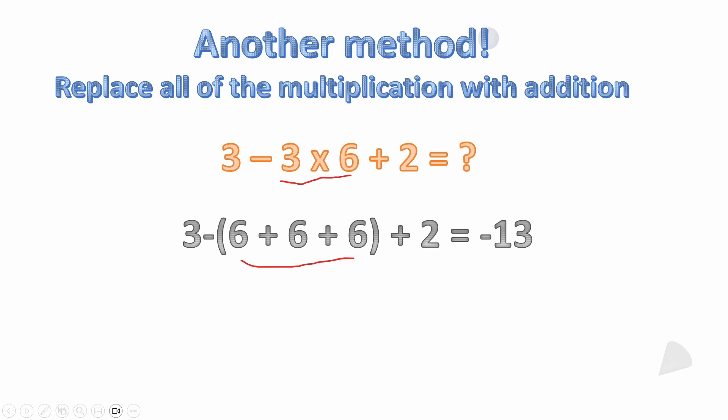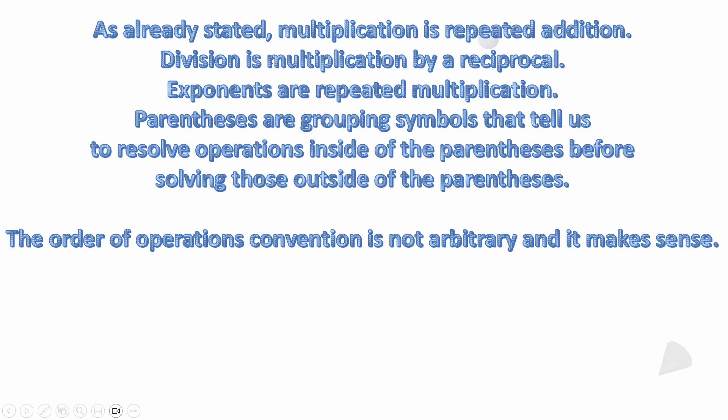So I hope that's clear. I see a lot of confusion with that. As already stated, multiplication is repeated addition. Division is multiplication by a reciprocal. Exponents are repeated multiplication. Parentheses are just grouping symbols that tell us to resolve operations inside of those parentheses before solving anything outside of the parentheses. So the order of operations convention is not arbitrary and it makes sense.